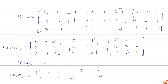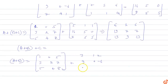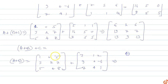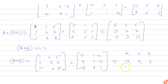A + B gives: 1+3=4, 0+1=1, 5+2=7, 3+9=12, 2+0=2, 7-6=1, 5+7=12, 4+4=8, 8+1=9. So the A + B matrix is 4 1 7 / 12 2 1 / 12 8 9.